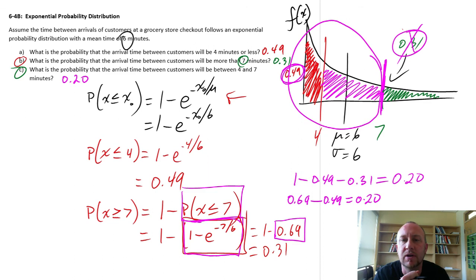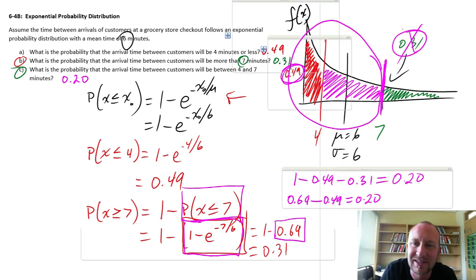So there we go, kind of a long way, easy way of calculating that same value, depending on what information you have and what the intermediate steps are building up to it. There we have it, our probabilities for the arrival time between customers at a store. Thank you for watching. Bye-bye.